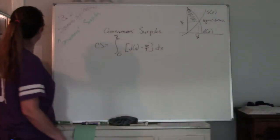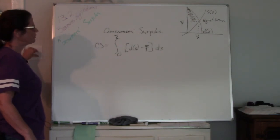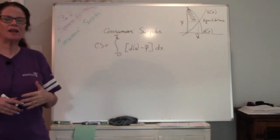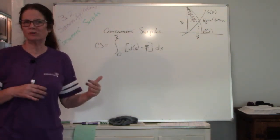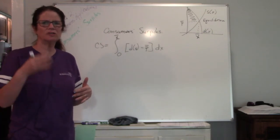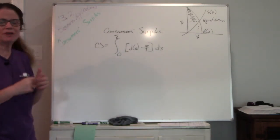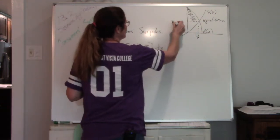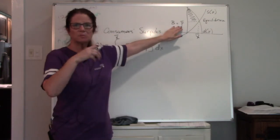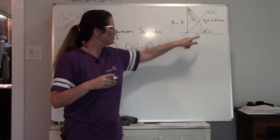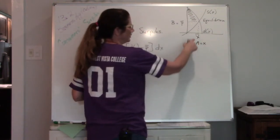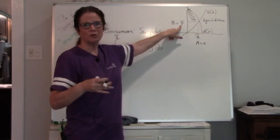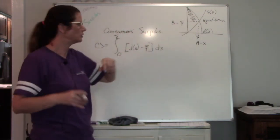Here's a lesson on consumer surplus. I changed some of the values to match MyMathLab. In the introductory lesson I used 'B' for market price, but in MyMathLab they use 'P with a bar over it.' Similarly, for the number of products, the introductory video used one variable but MyMathLab uses 'X with a bar over it.' It means the same thing — this is the number of products and this is the market price.